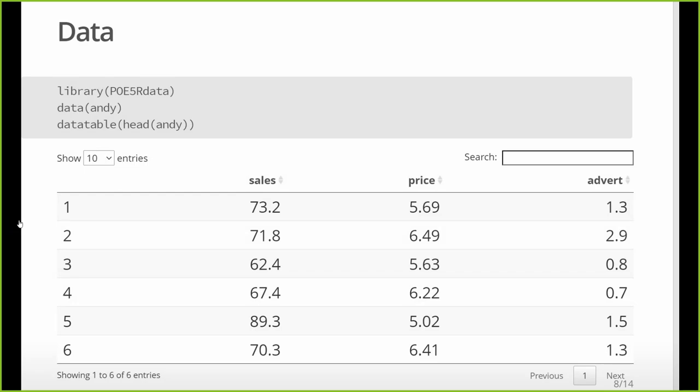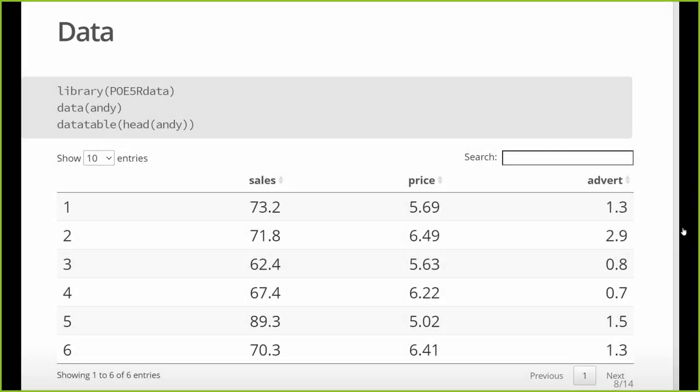Andy's big hamburger sales - we have some great datasets. There's actually a package on CRAN called POE5Rdata - Principles of Econometrics fifth edition. I know you have the fourth edition, don't worry, I'm taking care of that. That loads all the data sets from this book into your R installation as built-ins. Then I can use this function 'data' to create the data frame Andy, which has sales, price, and advertisement budgets for Andy's hamburger stand.